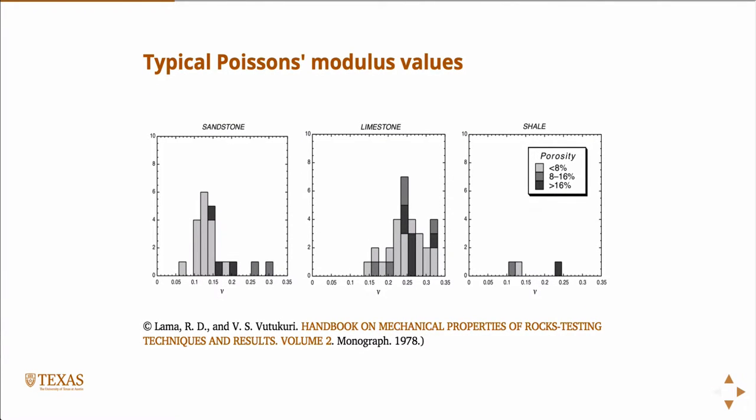So Poisson ratios. Typical values of Poisson ratios. This is pretty consistent for most rocks. I think if you don't know any better, if you don't actually have a measurement, if you assume something about 0.2 for a rock, it's probably okay. Most rocks seem to be close to 0.2 on average.